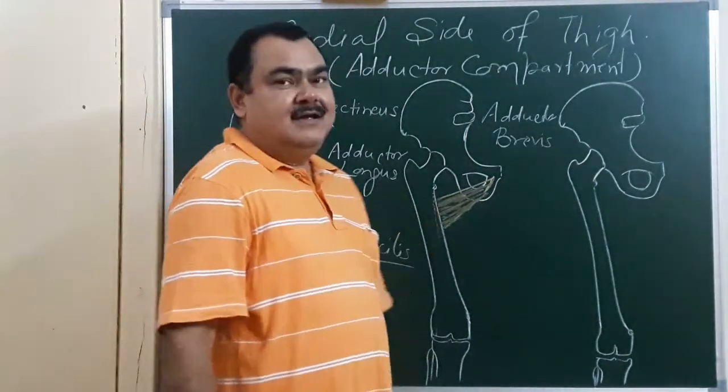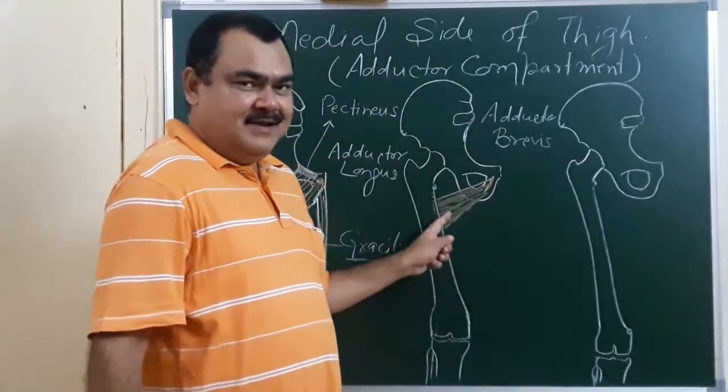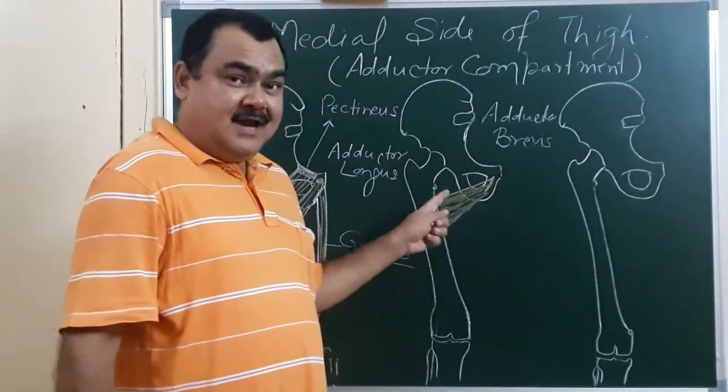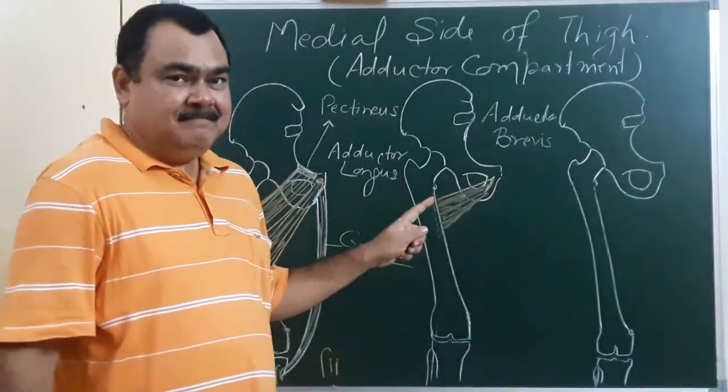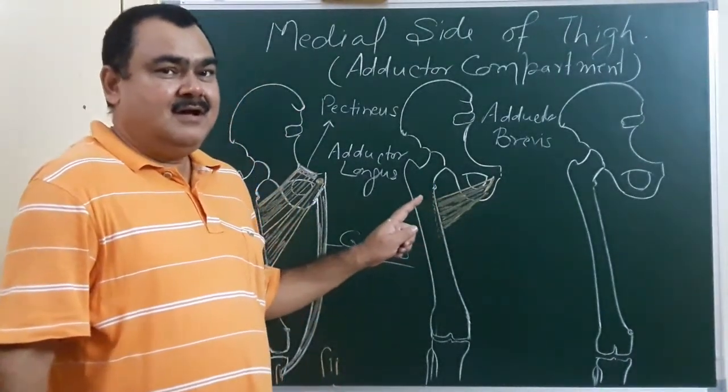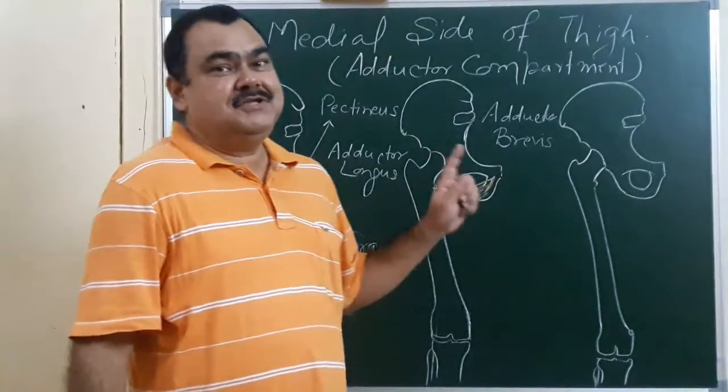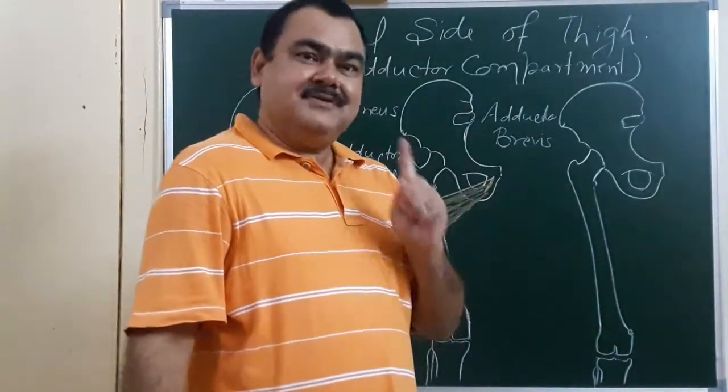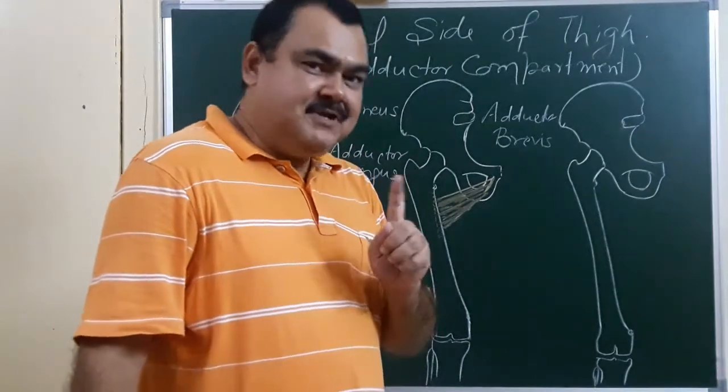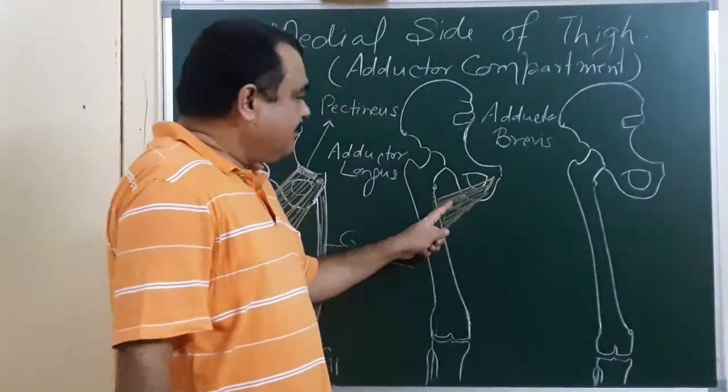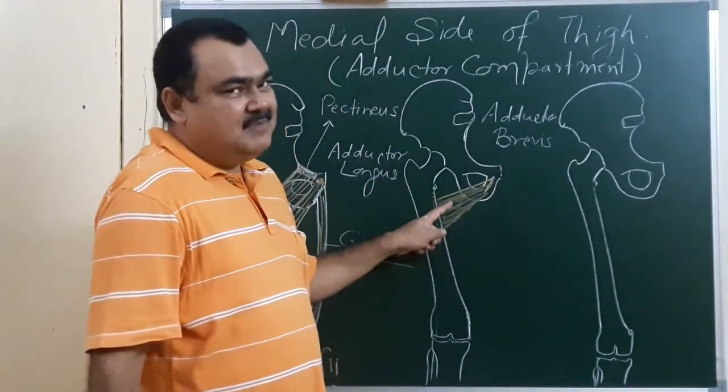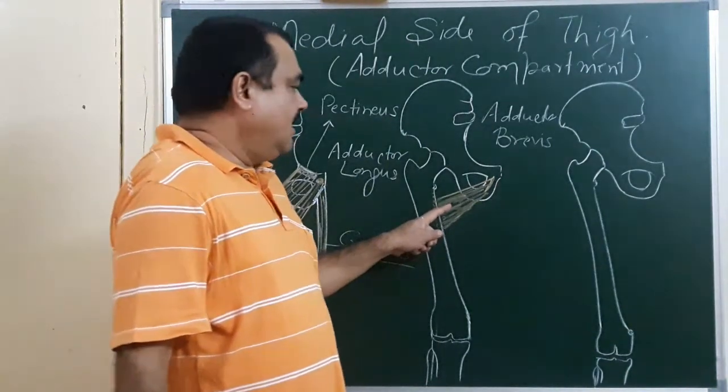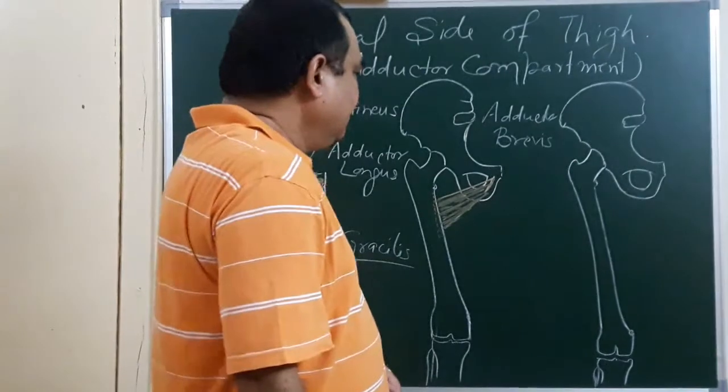Nerve supply, it has dual nerve supply. It is supplied by either anterior division of obturator nerve or posterior division of the obturator nerve. Same nerve, not dual. It is same nerve but its division is different. It may be supplied by anterior division or it may be supplied by posterior division of the obturator nerve.